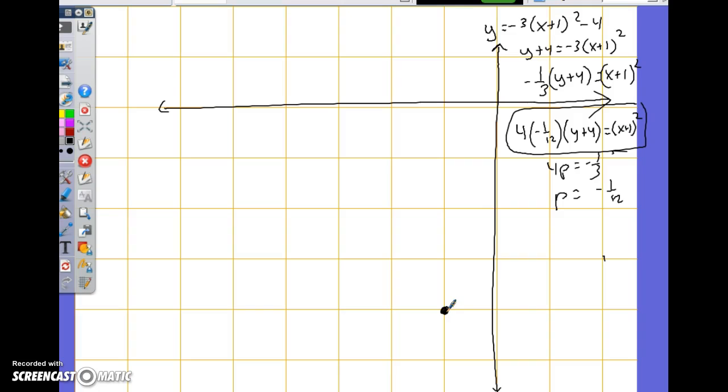Foci. It's going to be down to 1 twelfth. Ew. So the vertex is at negative 1, negative 4. The axis of symmetry is going to go through at negative 1. Now I'm making a mirror image. The foci is going to be negative 1, negative 4 and a twelfth, right? Yes.